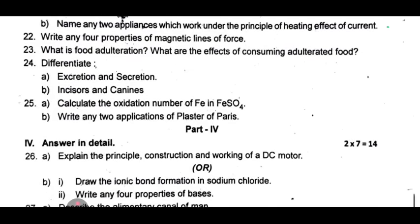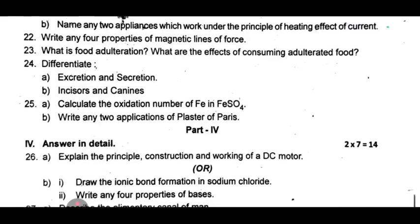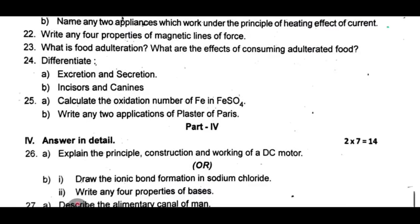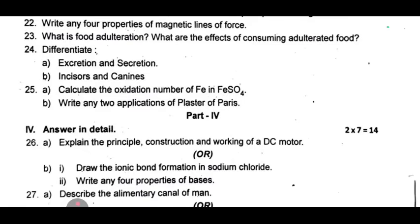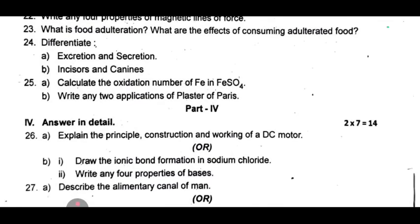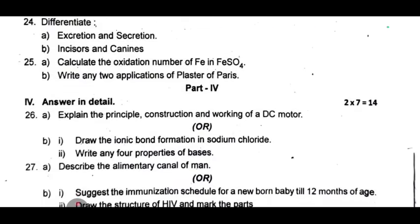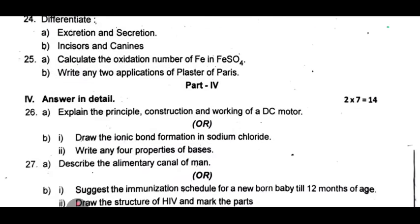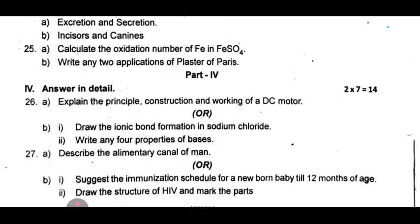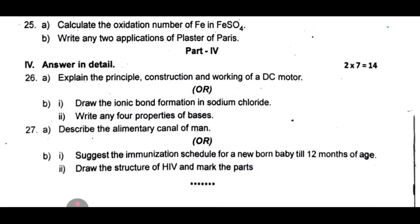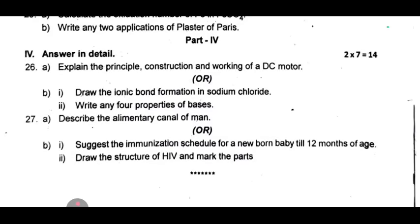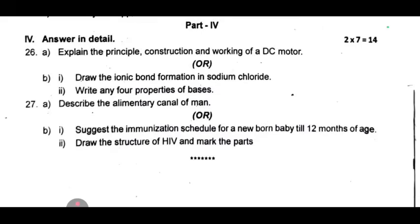Part 4, 5-mark questions. 26th one: A — explain the principle, construction, and working of a DC motor — most frequent question; B — draw the ionic bond formation in sodium chloride and write any four properties of bases. 27th one: A — describe the alimentary canal of a man; or B — suggest the immunization schedule for a newborn baby till 12 months of age, or draw the structure of HIV and mark the parts.